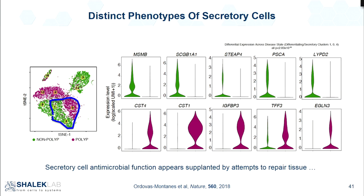When we contrast these different populations by differential expression, a lot of the antimicrobial function that we would normally have in these cells has been replaced by genes associated with tissue repair — which makes sense, it's a barrier that's breaking down and the tissue is trying to repair itself.